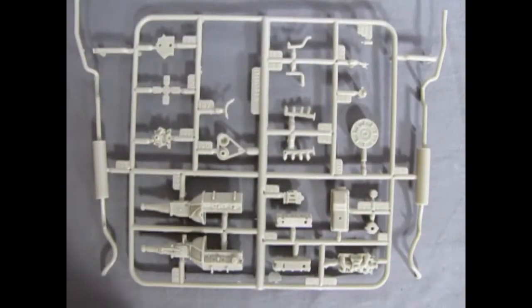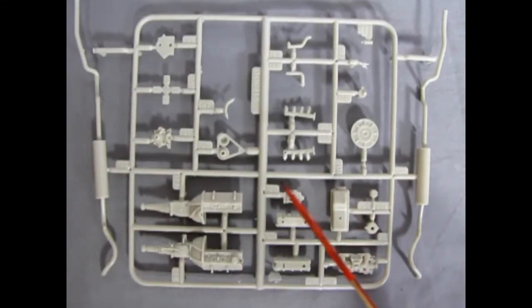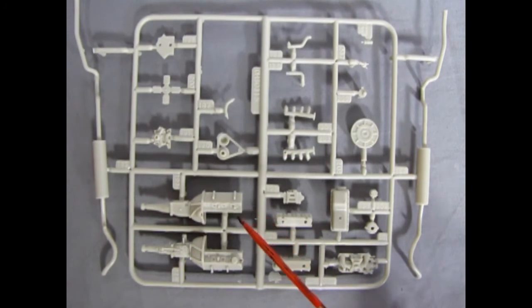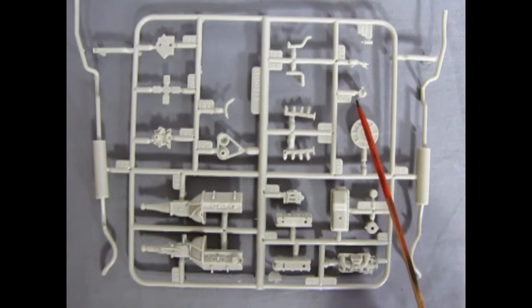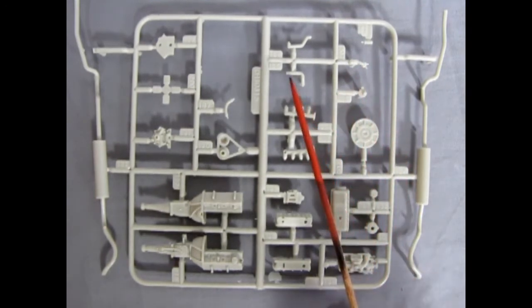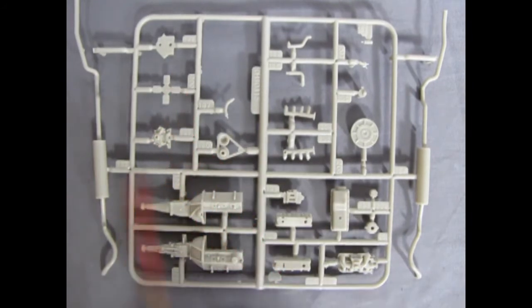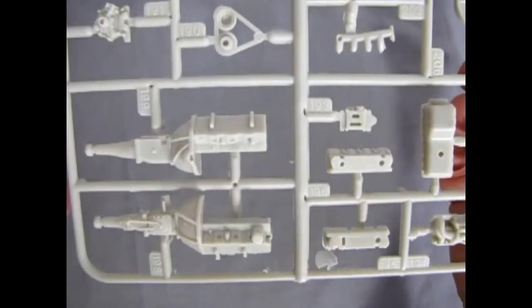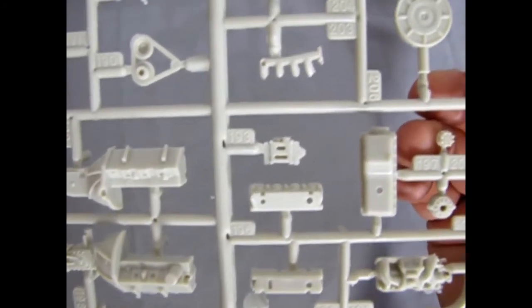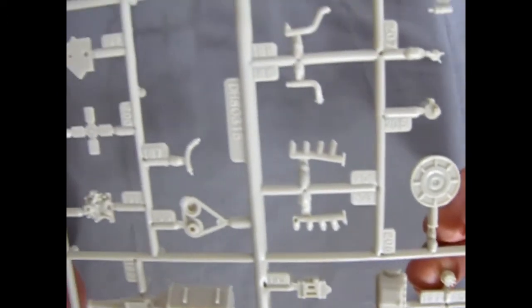This parts tree includes all the pieces for our engine block assembly for the Ford 302, including our engine block and transmission halves, cylinder heads, carburetor, intake manifold, oil pan, alternator, distributor, air cleaner, and engine bits, as well as our exhaust manifolds, all the hoses, our pulleys, our fan, front engine covers, and our exhaust pipes with mufflers. And again some really nice detail onto all these different components.